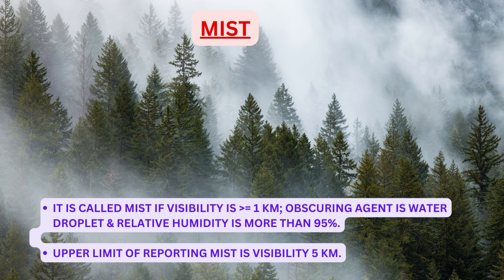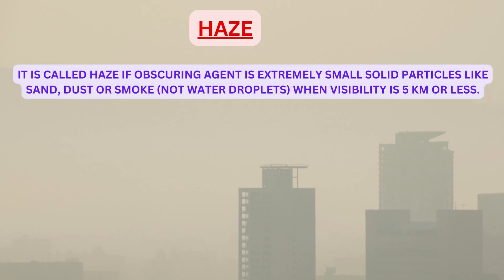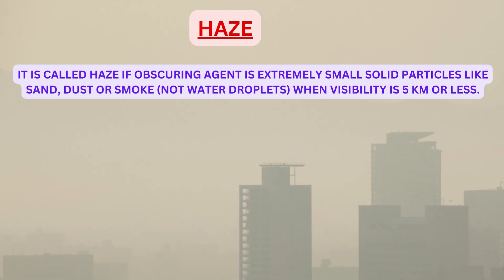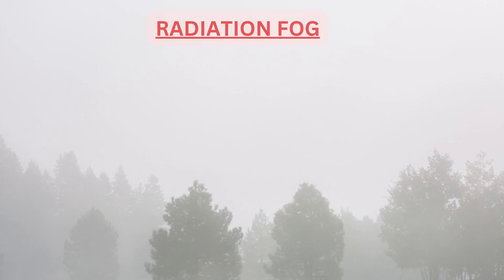There is one important difference between fog, mist, and haze. It is called haze if the obscuring agent is extremely small solid particles like sand, dust, or smoke — and not water droplets — and the visibility is five kilometers or less.